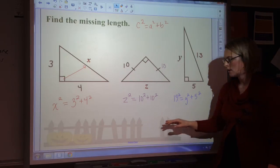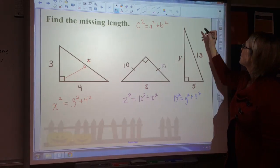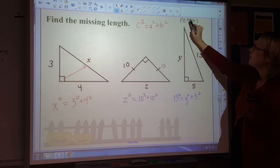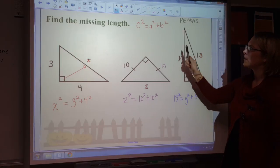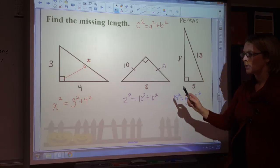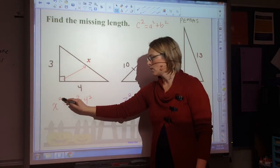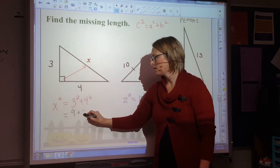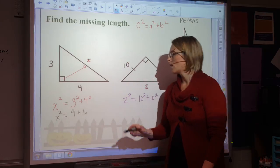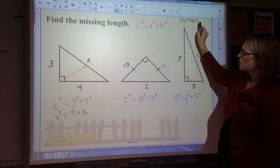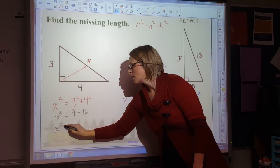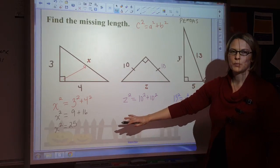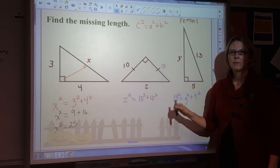Following the order of operations — PEMDAS: parentheses, exponents, multiplication, division, addition, subtraction — in the formula I don't have any parentheses to worry about, so next step is exponents. X squared I can't simplify, so I simplify 3 squared to 9 and 4 squared to 16. So X squared equals 9 plus 16. I don't have multiplication or division, so I add to combine like terms: X squared equals 25.